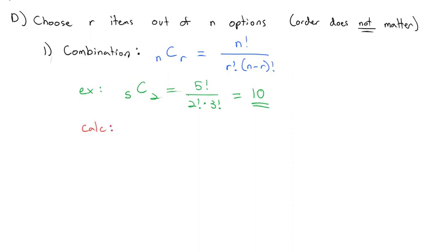The combination is right next to the permutation under the probability menu on your calculator. If you're on the TI-83 or 84, first hit the math button; on the TI-30, there's a probability button. You type in N first, then the nCr button, then R. If you do 5 nCr 2, your calculator gives you 10 for that combination.